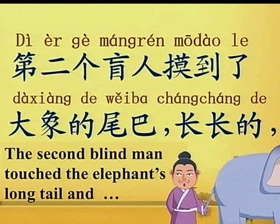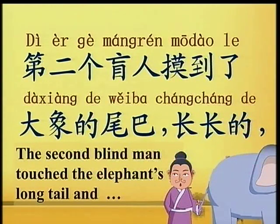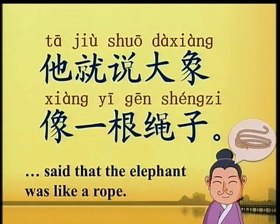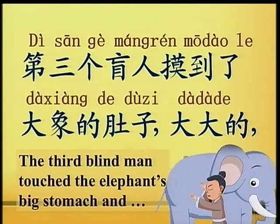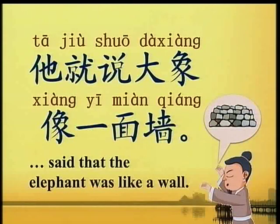第二个盲人摸到了大象的尾巴，长长的。 The second blind man touched the elephant's long tail and 她就说大象像一根绳子。 said that the elephant was like a rope. 第三个盲人摸到了大象的肚子，大大的。 The third blind man touched the elephant's big stomach and 她就说大象像一面墙。 said that the elephant was like a wall.